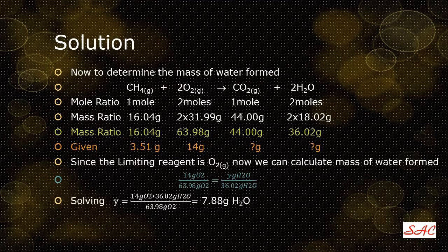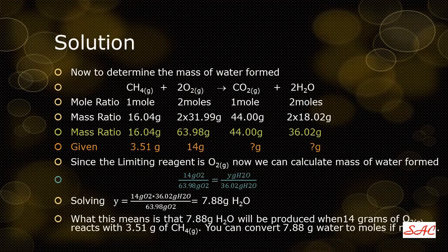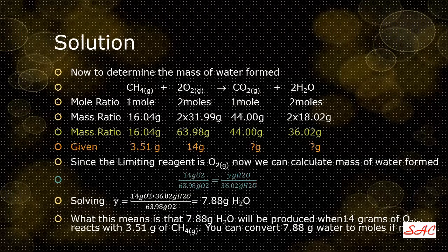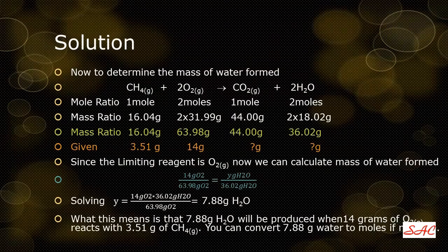Rearranging and solving for y gives 7.88 grams of water. This means 7.88 grams of water will be produced when 14 grams of oxygen reacts with 3.51 grams of methane. If you need to express your answer in moles, you can convert 7.88 grams of water to moles. But in this problem, the answer in grams is sufficient. Your final answer is: 7.88 grams of water will be formed if 14 grams of oxygen reacts with 3.51 grams of methane.